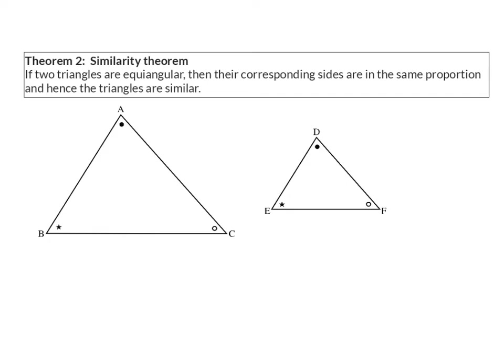Theorem 2, the similarity theorem. If two triangles are equiangular, then their corresponding sides are in the same proportion, and hence the triangles are similar.